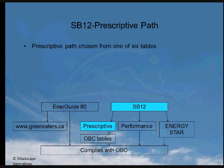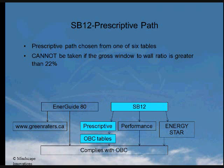The various prescriptive paths are found in six different climate tables, grouped by climate zone and space heating system type.